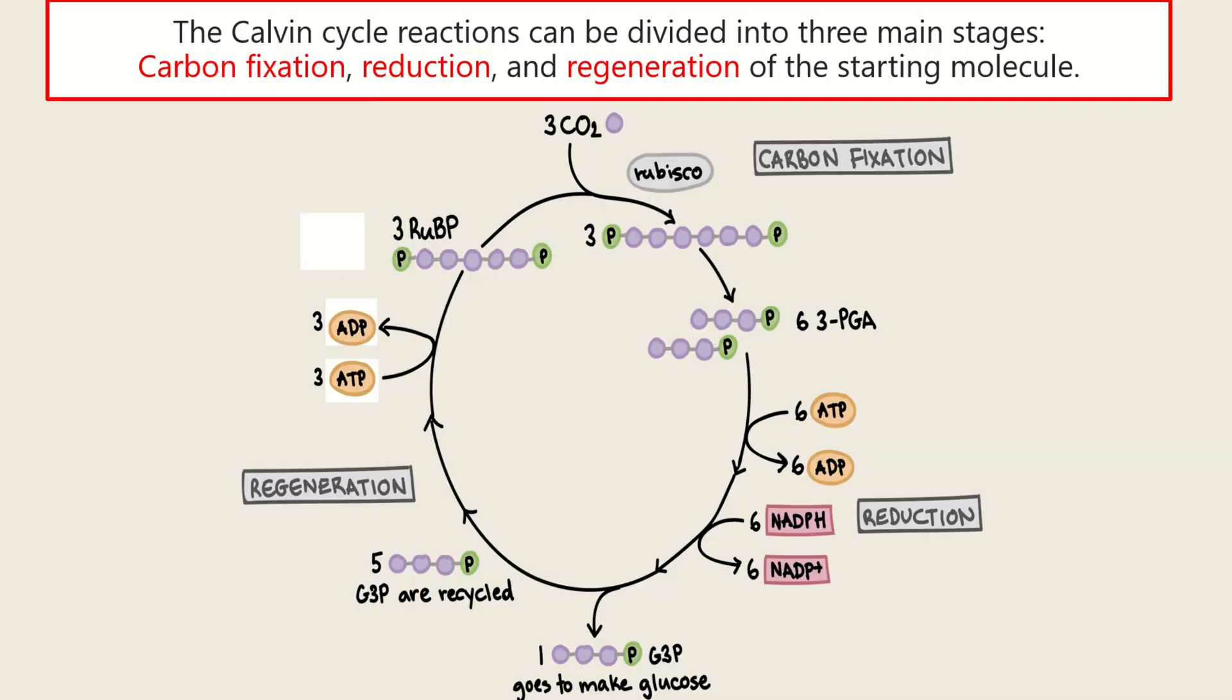The Calvin Cycle reactions can be divided into three main stages. Number one is the carbon fixation. Number two, reduction. And number three, regeneration. We will discuss each of the stages.